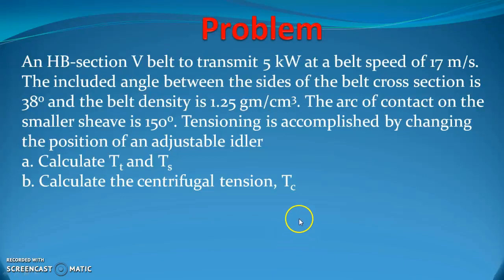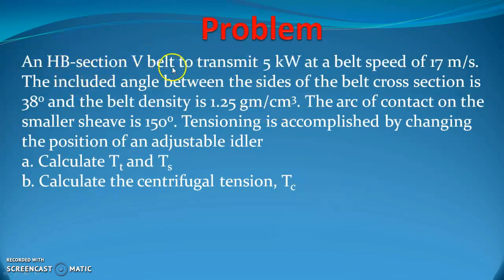Hello students, let's solve a problem on belt transmission, basically the PTO power transmission. The problem says: in HB section V-belt to transmit 5 kilowatt at a belt speed of 17 meter per second.